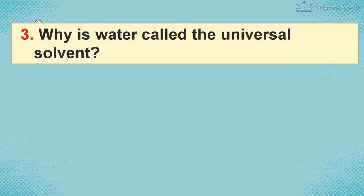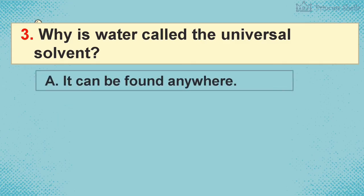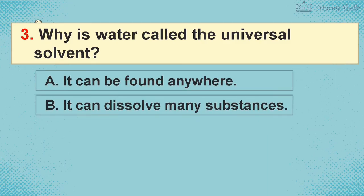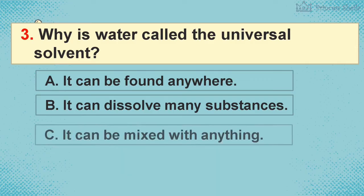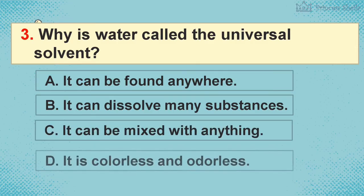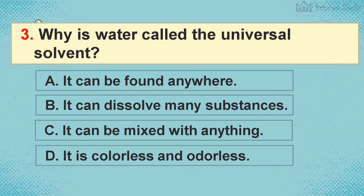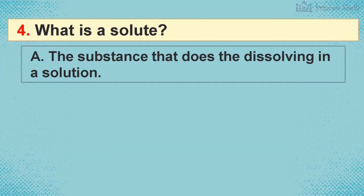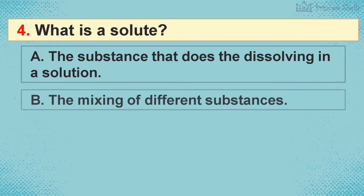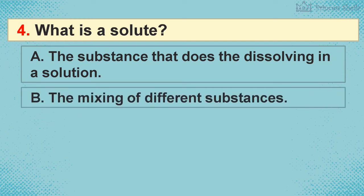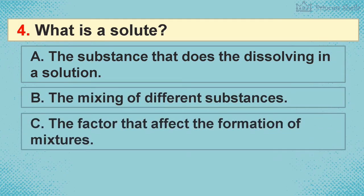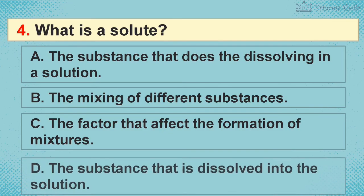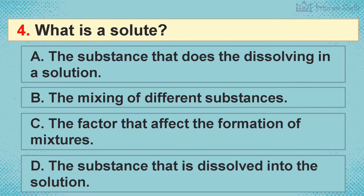Question 3: Why is water called the universal solvent? A) It can be found anywhere, B) It can dissolve many substances, C) It can be mixed with anything, D) It is colorless and odorless. Question 4: What is a solute? A) The substance that does the dissolving in a solution, B) The mixing of different substances, C) The factor that affects the formation of mixtures, D) The substance that is dissolved into the solution.